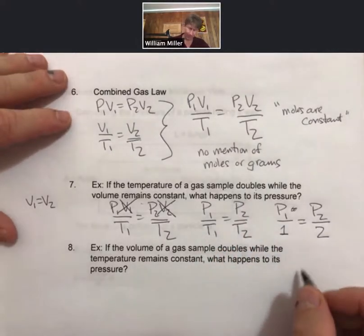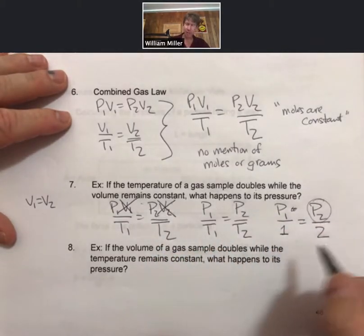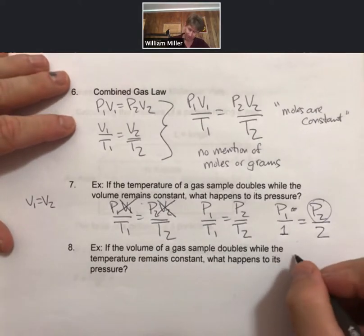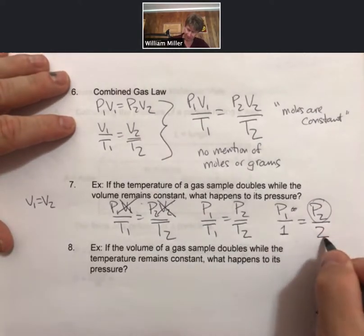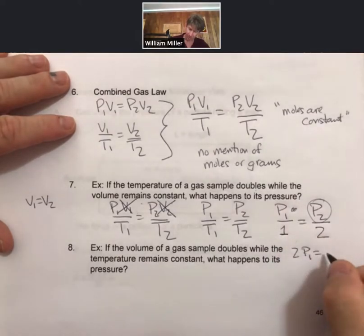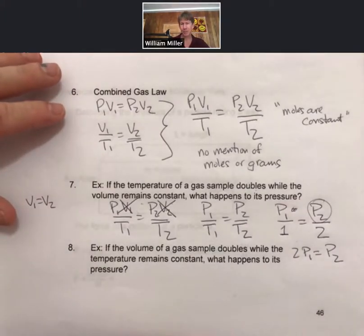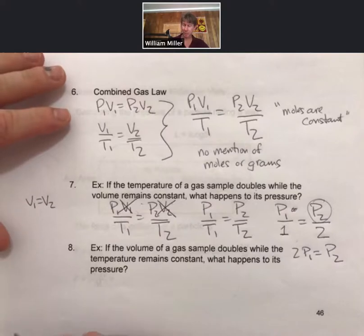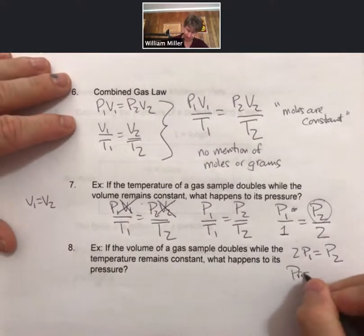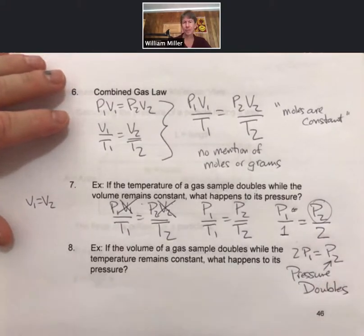What happens to its pressure? So what can we say about P2? And what we can say is by cross-multiplying, 2 times P1 equals 1 times P2, or just P2. So what we can say, what happens to its pressure, is that pressure doubles.